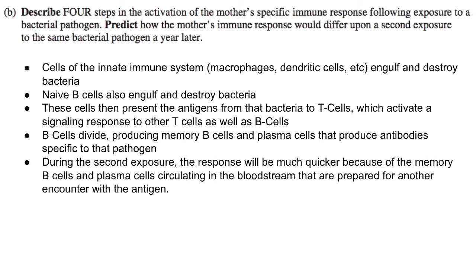Predict how the mother's immune response would differ upon a second exposure to the same bacterial pathogen a year later. During the second exposure, the response is going to be a lot faster because during the first exposure we produced many memory B cells and plasma cells specifically tailored to produce antibodies for that one pathogen. So when this pathogen shows up again, antibodies will be released almost immediately and the infection will be taken care of quickly.